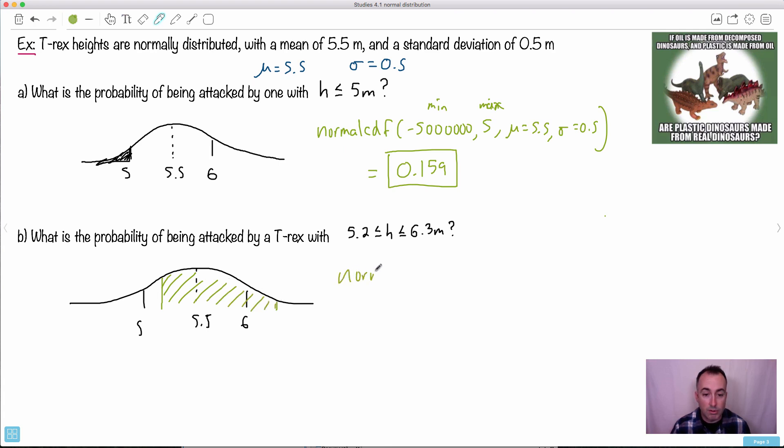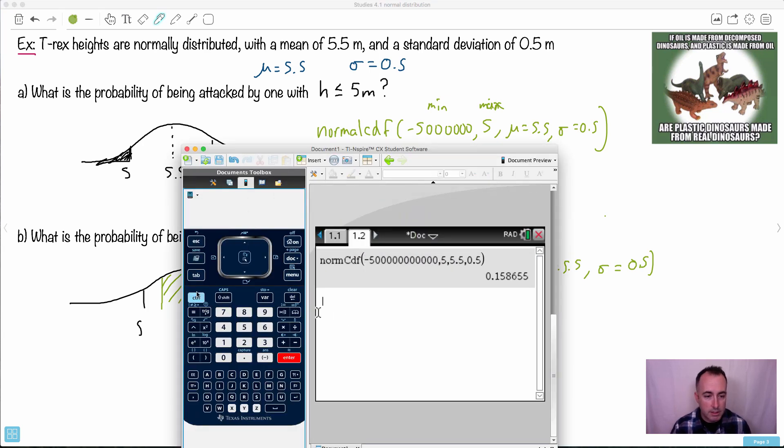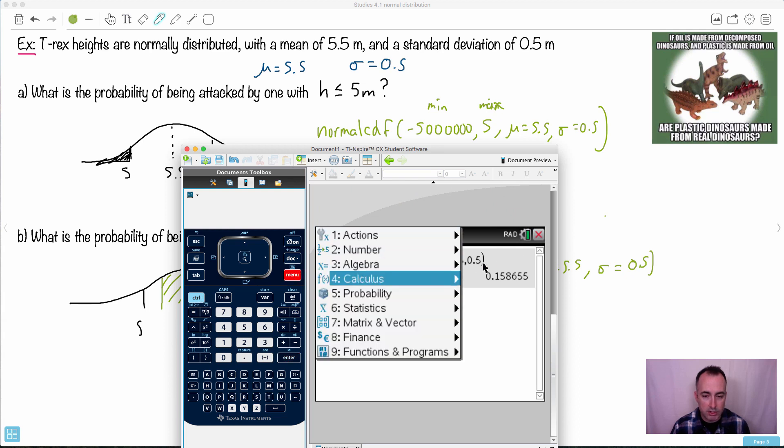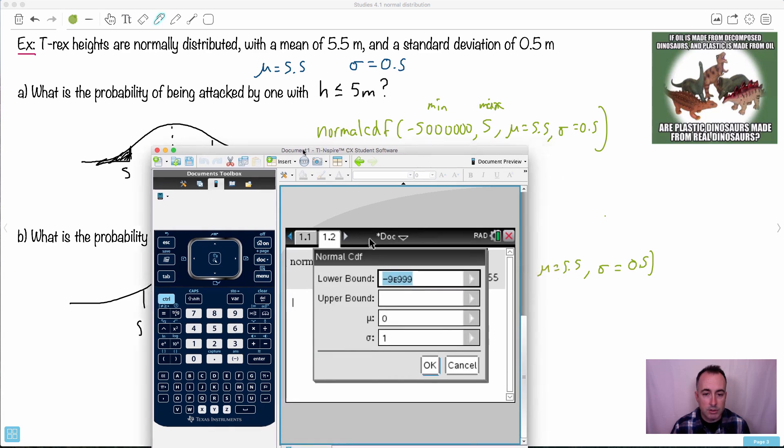Well, again, we want normal CDF. Can you think what we put in for the minimum this time? Hopefully you know. I'll put in 5.2. Your maximum should be 6.3. Your mean is still 5.5, and your standard deviation is still 0.5. Let's see if this works. So again, let's go ask for help from our calculator. So I do menu. Of course I could have just gone up and grabbed that one. I just want to show you each time how to get it. So stats, distributions, normal CDF.